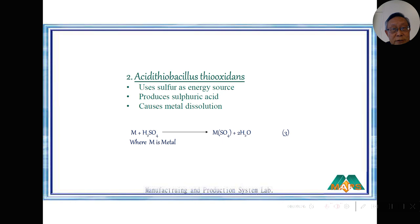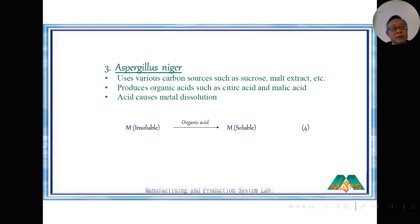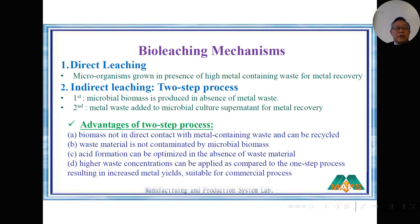The second microbe is Acidithiobacillus thiooxidans (TT). It uses sulfur as an energy source and in growing produces sulfuric acid, which dissolves metals. The third microbe is Aspergillus niger. It uses carbon sources such as sucrose and produces organic acids like citric acid and malic acid. These weak organic acids can also dissolve metals.